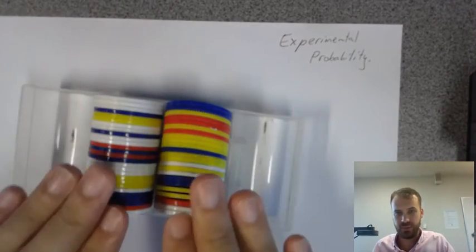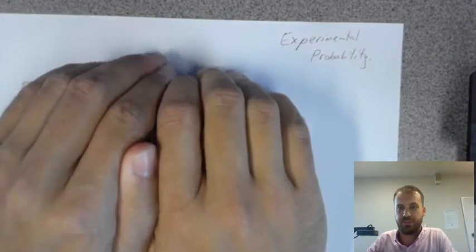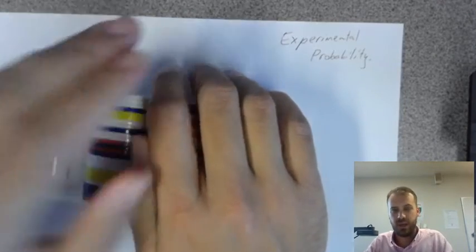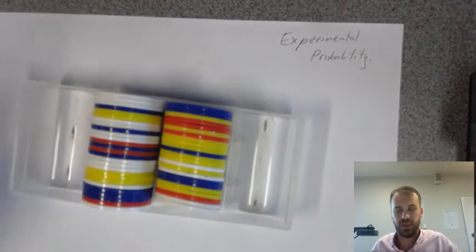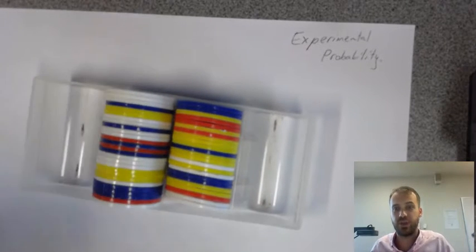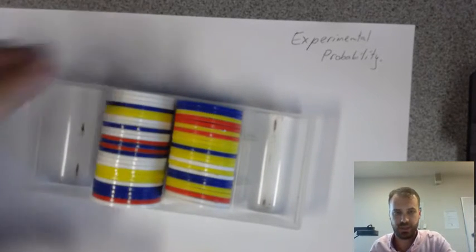So, I'm going to, rather than count them, because let's imagine that this is a closed box and you can't see it, I'm going to perform an experiment. And hopefully using that experiment we can get a good idea of what the probability of these things happening is.